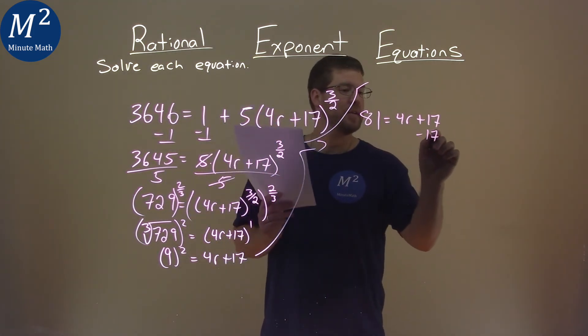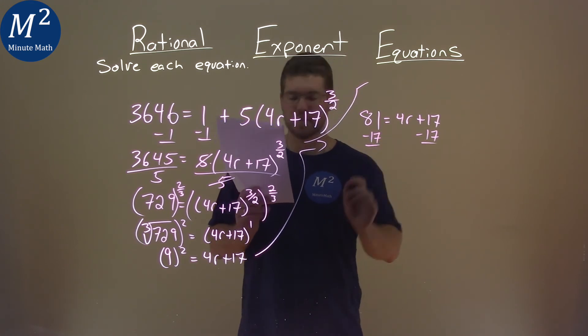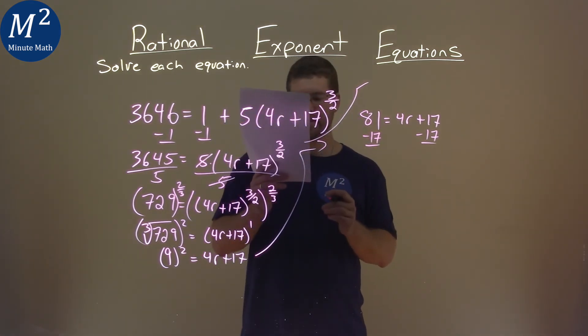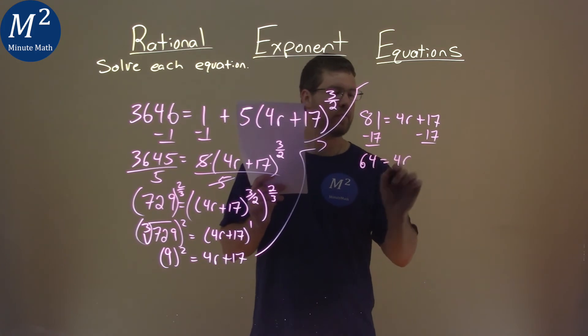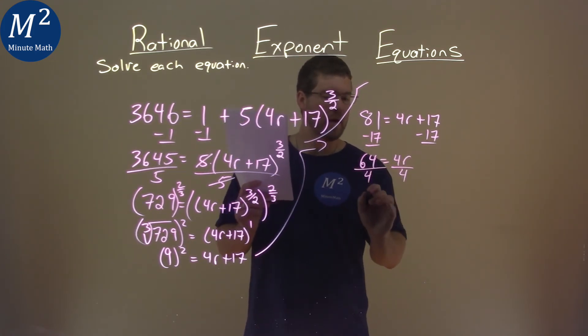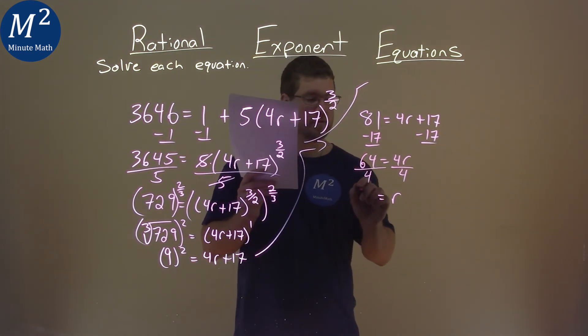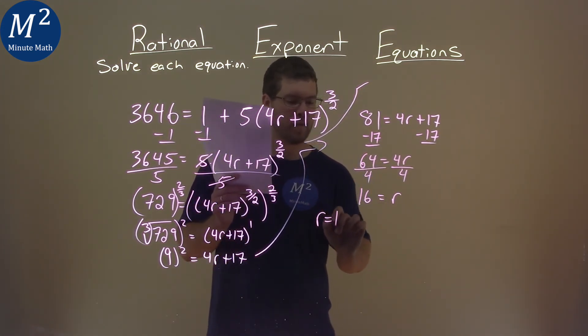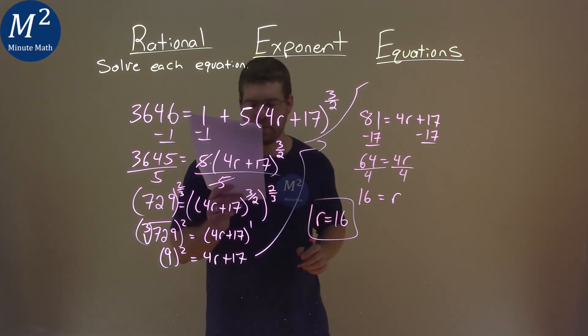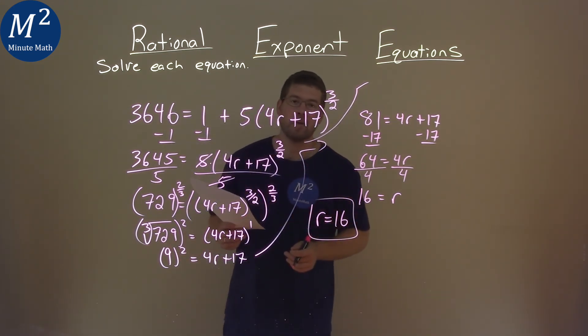Subtract the 17 from both sides, just like we normally do. And 81 minus 17 is 64. And that equals 4r. Divide both sides by 4. And we have r is equal to 64 divided by 4 is 16. We can write this as r equals 16, and that is our final answer.